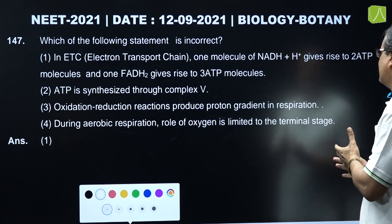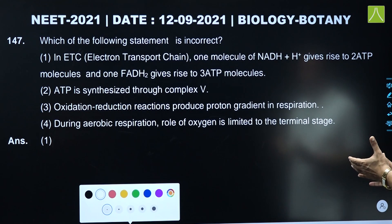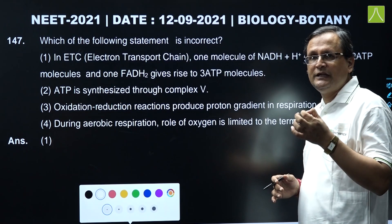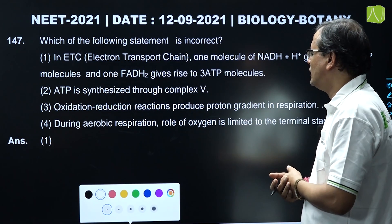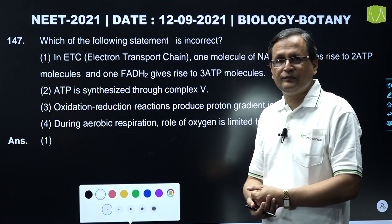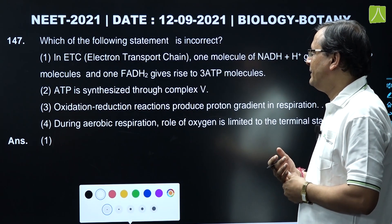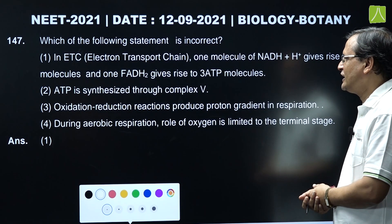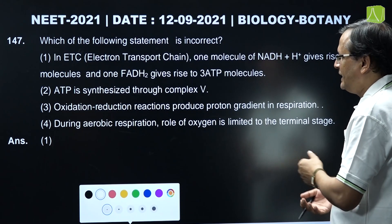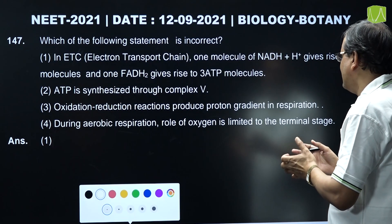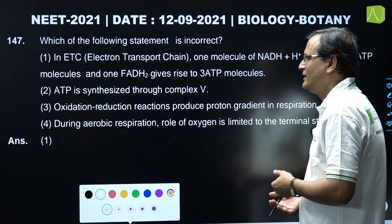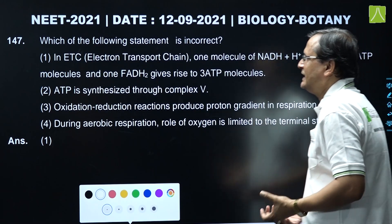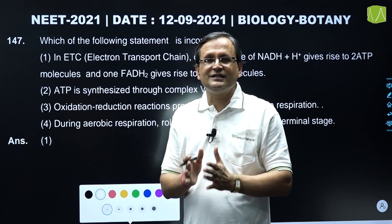Question 147: Which of the following statements is incorrect? Option 1 - in ETC, one molecule of NADH+ gives rise to 2 ATP molecules and one FADH2 gives rise to 3 ATP molecules - this is incorrect, because 1 NADH+ gives 3 ATP and 1 FADH2 gives 2 ATP molecules in oxidative phosphorylation. The remaining statements are correct: ATP is synthesized through Complex 5 (also called F0F1 complex); oxidation-reduction reactions produce proton gradient in respiration; during aerobic respiration, the role of oxygen is limited to the terminal stage as the last electron acceptor. So the correct answer is option one.